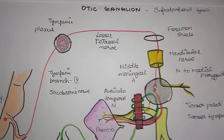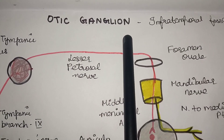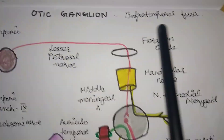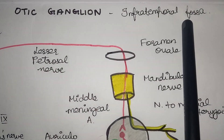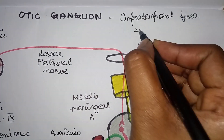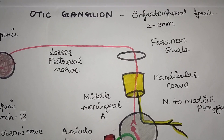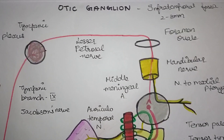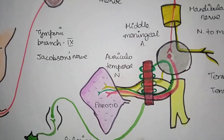Welcome to MBBS Tamil. Now we will see the topic of otic ganglion. The otic ganglion is a parasympathetic ganglion located in the infratemporal fossa. It is 2 to 3mm in size. Its function is as a secretomotor fiber to the parotid gland, helping in the secretion of the parotid gland.